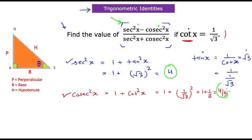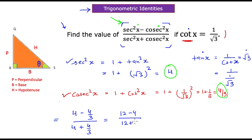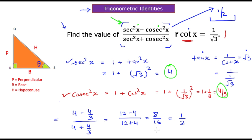Substituting sec²x = 4 and cosec²x = 4/3 into the expression: the numerator is 4 − 4/3 and the denominator is 4 + 4/3. Simplifying: (12 − 4) / (12 + 4) = 8/16 = 1/2. The entire expression equals one half. The key point is how standard identities enable these calculations.